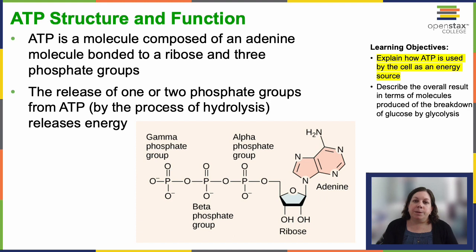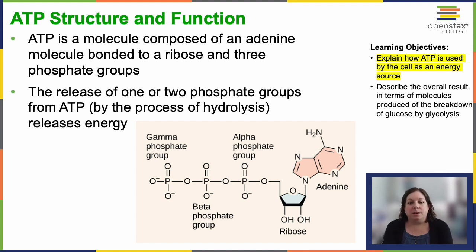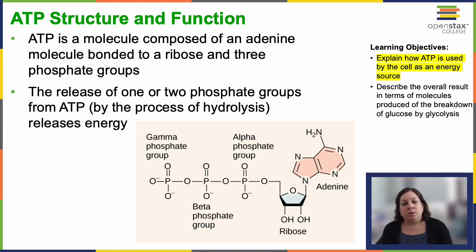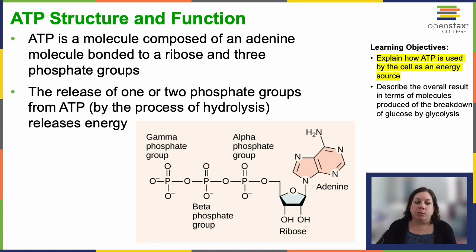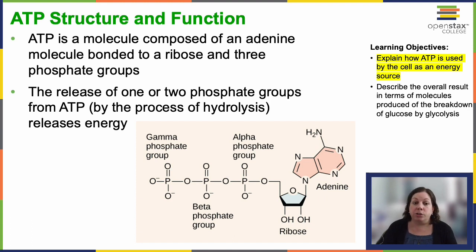ATP centers around the base of its molecule — adenosine monophosphate, AMP — which consists of an adenine, a ribose sugar, and a single phosphate group. Adding another phosphate group yields adenosine diphosphate, ADP, and the third phosphate group forms adenosine triphosphate, ATP.